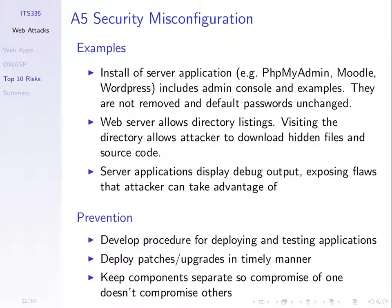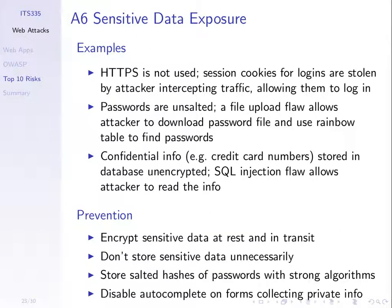We've mentioned security misconfiguration: setting up your server in the wrong way such that there are holes in it, and people can get information from your website that they shouldn't be able to get. Sensitive data exposure is releasing confidential information. If you don't use HTTPS, people can intercept the packets and see confidential information. If you store passwords in a database and don't store them in the right manner, if someone compromises that database they can learn all the passwords.